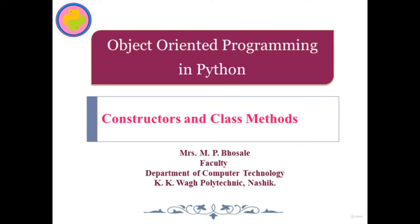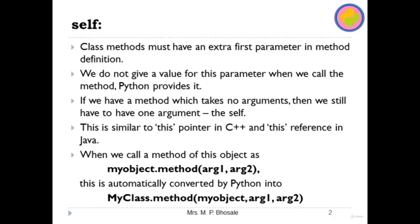Hello and welcome to this lecture on Constructors and Class Methods. This is Manjusha Bosle from KKVAG Polytechnic Nashik. In this lecture we will discuss how to write constructors in Python and how to write various class methods in Python under OOP. Before writing any method inside a class, we need to think about the 'self' keyword used as the first parameter. Class methods must have an extra first parameter in the method definition, and we do not give a value for it while calling the function — Python itself provides it.